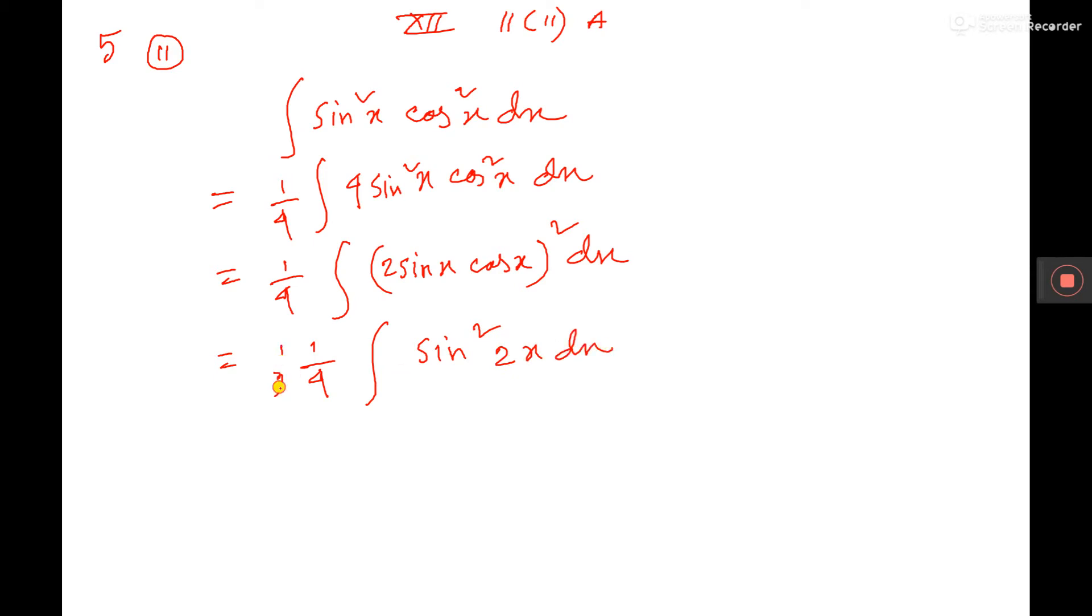Again, if you take 1/2 into 2, then the 2 sin²x formula: 1 minus cos 2x. So 2 into 2, that is 4x dx.